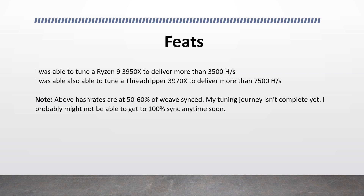After spending a considerable amount of time optimizing my machines, I was able to take a Ryzen 9 3950X to deliver more than 3,500 hashes, and a Threadripper 3970X to deliver more than 7,500 hashes. Please note that these hash rates are at 50 to 60% of the total weave. My tuning journey isn't complete yet, and I probably might not be able to get to 100% sync anytime soon, but whatever procedures I followed to get optimized hash rates still holds.